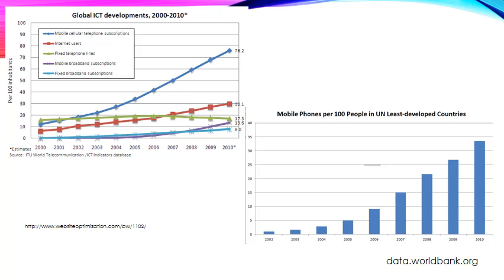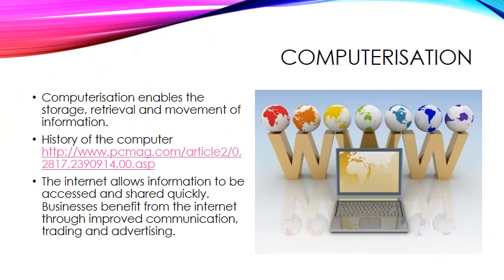It would be interesting to see what the 2014 statistics are. Computerisation is the other technology in ICT that has changed how we communicate around the world. Computerisation enables the storage, retrieval and movement of information. If you type into Google 'PC Mag history of the computer,' you can see how computers have changed over the years. Now the internet allows information to be accessed and shared quickly, and businesses can become more global because they can communicate, trade and advertise via computer.